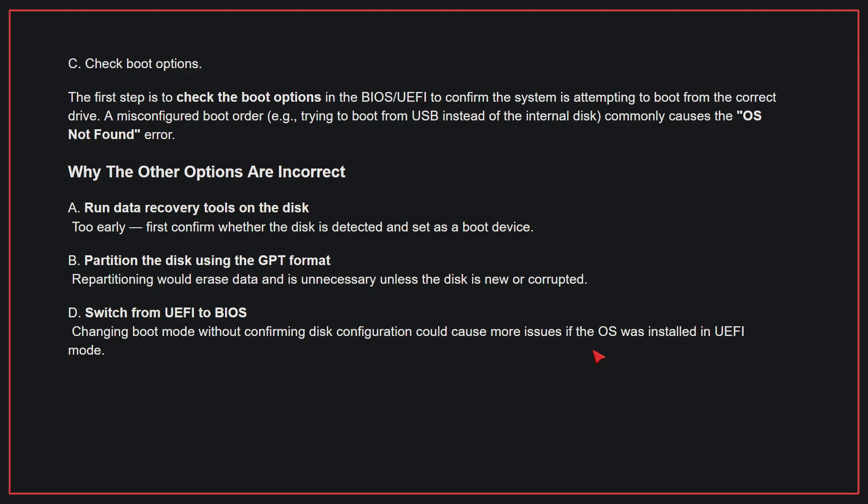Why the other options are incorrect: A, run data recovery tools on the disk — this is too early; first confirm whether the disk is detected and set as a boot device. B, partition the disk using the GPT format — repartitioning would erase data and is unnecessary unless the disk is new or corrupted. D, switch from UEFI to BIOS — changing boot mode without confirming disk configuration could cause more issues if the OS was installed in UEFI mode. Therefore, the correct answer is C.